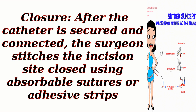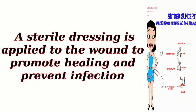Step 8: Closure. After the catheter is secured and connected, the surgeon stitches the incision site closed using absorbable sutures or adhesive strips. A sterile dressing is applied to the wound to promote healing and prevent infection.